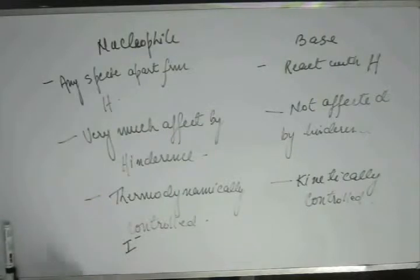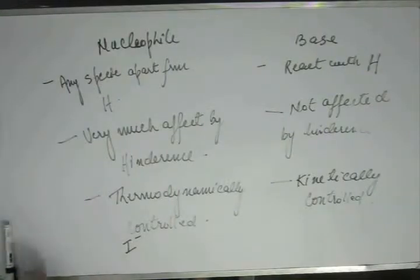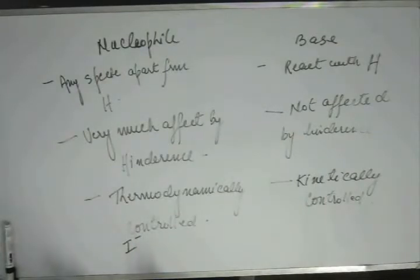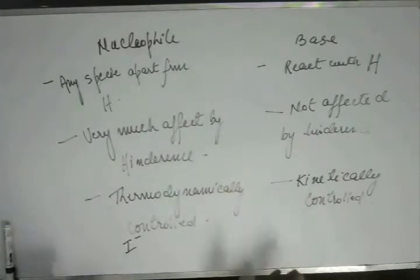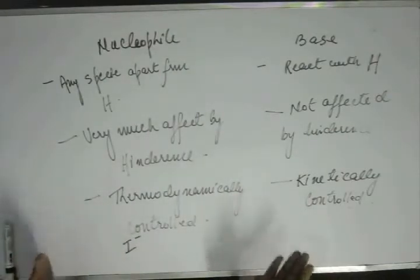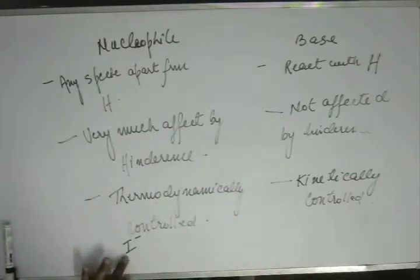I⁻ is the conjugate base of HI, which means I⁻ is highly stable. Another explanation: I⁻ is a big atom belonging to the 5th period. The size of its P orbital will be very large, and the electron in that P orbital will be diffused, making the electronic density very low, which makes the ion highly stable.